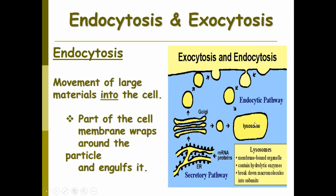This helps break down big macromolecules into subunits. Or you can go the other way, where RNA makes your protein in the ER, which goes to the Golgi to package it, and it's transported out of the cell. In general, endo is in and exo is out.